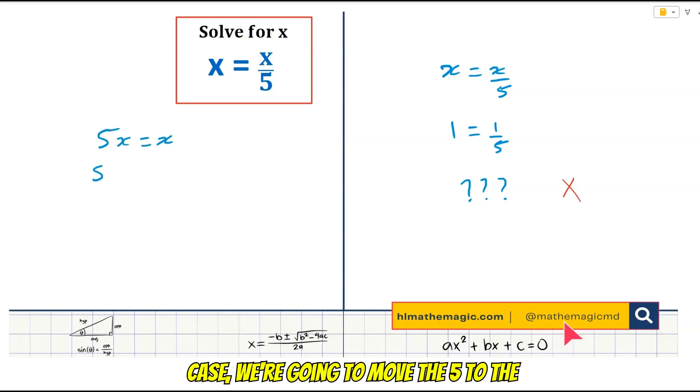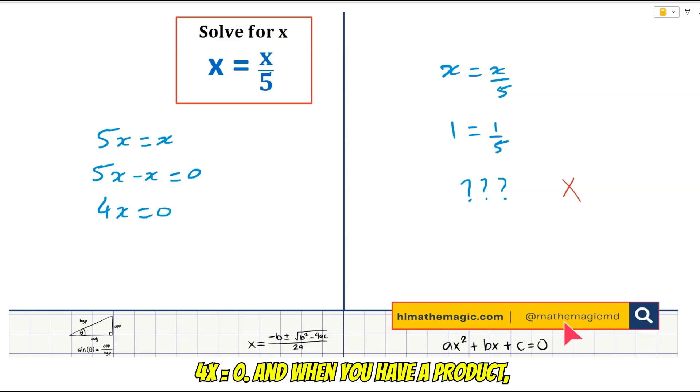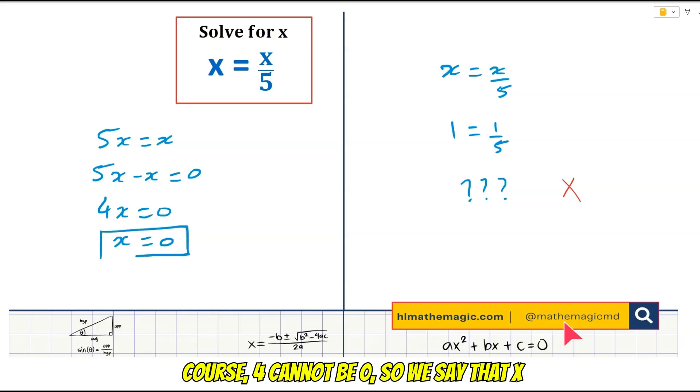In this case, we're going to move the 5 to the left to get 5x is equal to x, and then we'll do 5x minus x equals 0 to get 4x equals 0, and when you have a product, either the 4 is 0 or the x is 0, and of course 4 cannot be 0, so we say that x is 0.